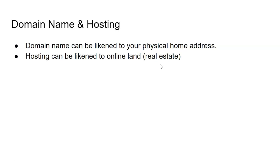Once you do your keyword research and arrive at a keyword you want to use, you can coin your domain name from it. A domain name is like your address — it's the name your website or blog is going to carry. For instance, if you are focusing on bankruptcy, you might use something like 'bankruptcyinfo.com' or 'bankruptcy.com,' or something around that keyword. It could be .com or .org, but I recommend you go with .com.